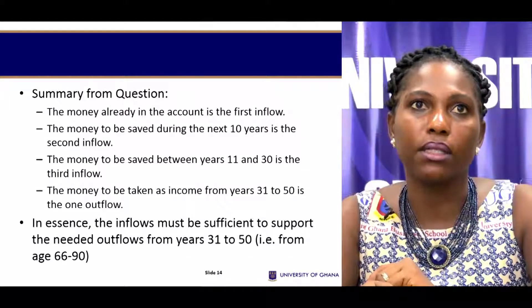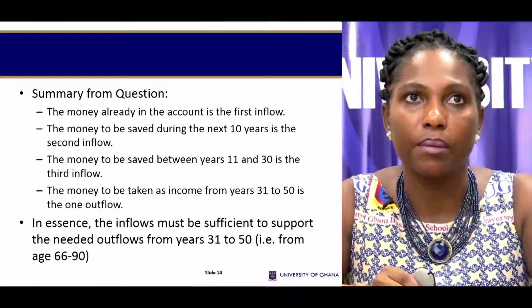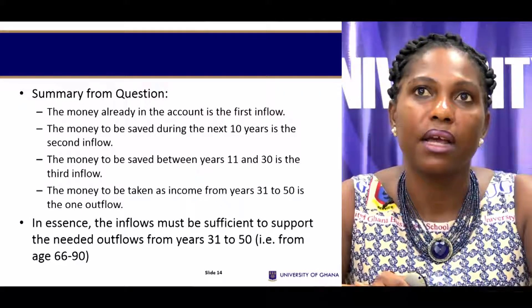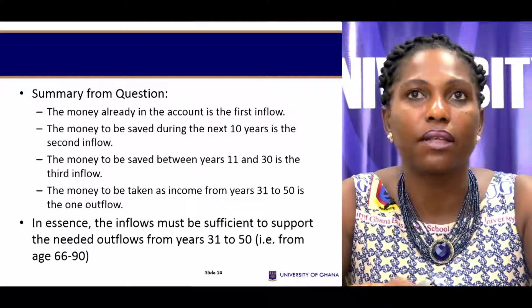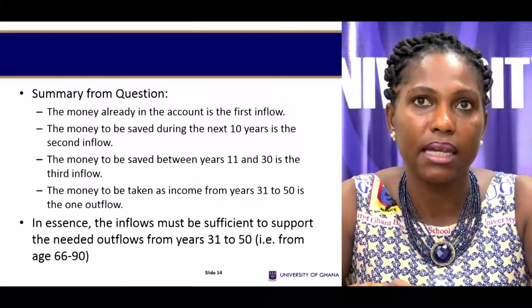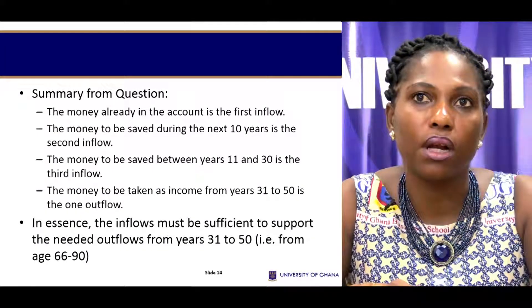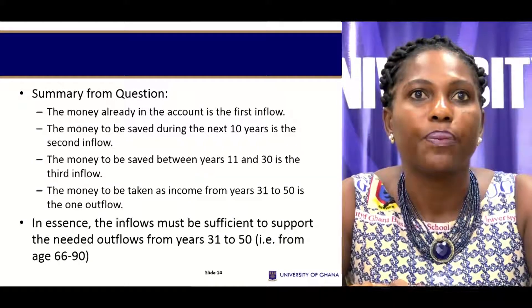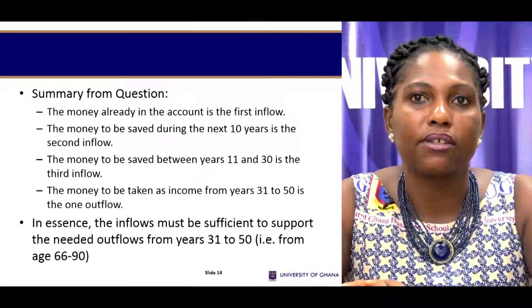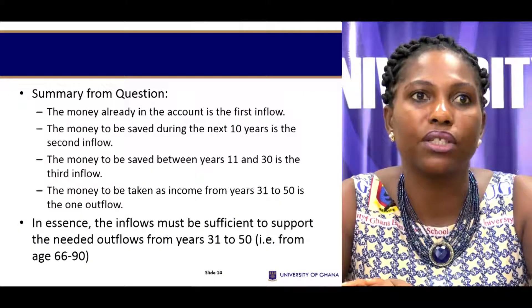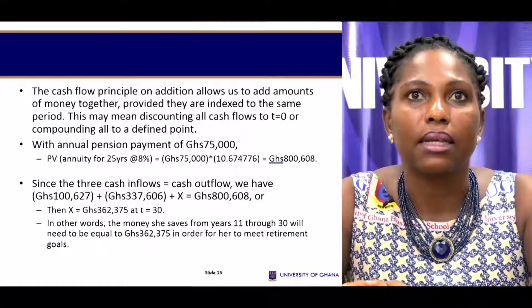Summarizing the problem: at time zero she already has $10,000 in her account working toward the retirement plan. The second component is the $5,000 she will save every year for the next 10 years. From year 11 onwards she will make extra contributions after the kids leave school. The money she needs — from year 31 (age 66) through to year 55 (age 90) — is summarized based on her 25-year post-retirement income need.